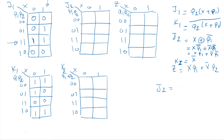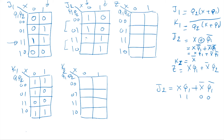For J2, which equals X·Q1 OR X-bar·Q1-bar: when X=1 and Q1=1, we fill those cells with ones (second column, bottom two rows). When X=0 and Q1=0, we fill the first column top two rows with ones. All other cells are zero.